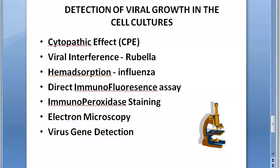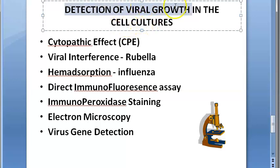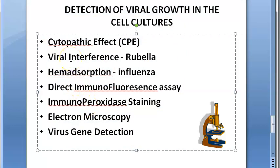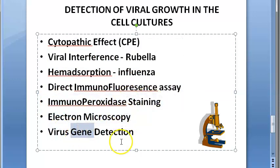In this video we want to look at the detection of viral growth in cell cultures. You took a cell line and tried to culture a virus, now you want to detect that the virus has grown. The methods of detection are: cytopathic effect, viral interference, heme adsorption, direct immunofluorescence assay, immunoperoxidase staining, electron microscopy, and virus gene detection.